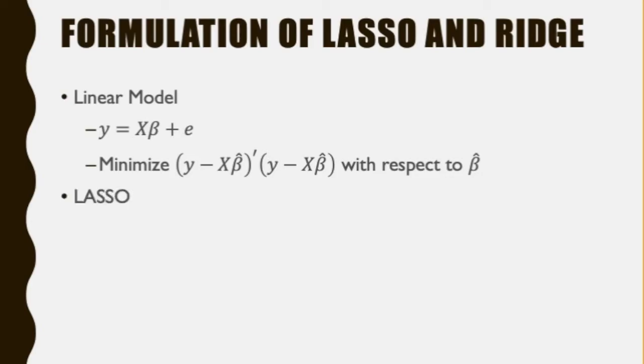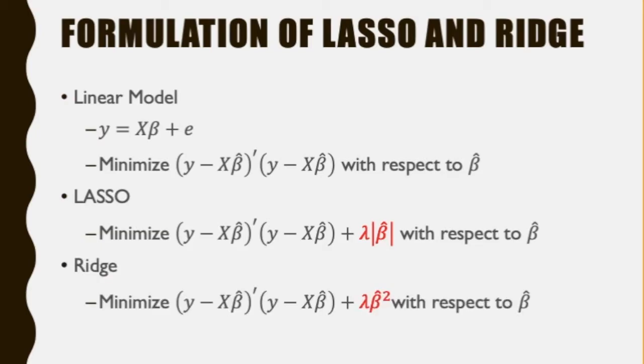The Lasso regression simply adds L1 norm or the absolute value of β̂. We also multiply the L1 norm by a positive real number lambda to control how much the L1 norm affects the estimation of β̂. For Ridge regression, it is very similar. Instead of L1 norm, now we add the L2 norm or the square of β̂.